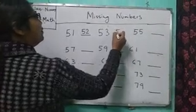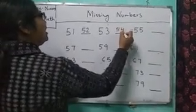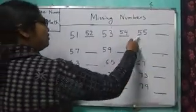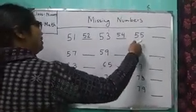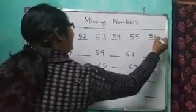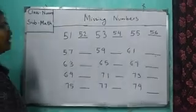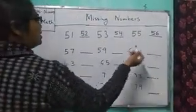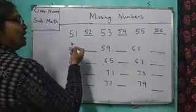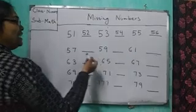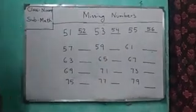Then you will fill here right here. 54, 55, 56. Clear? So you will have to follow this process. You will have to read the number serially. Then you can fill this missing number very easily. Again I am going to repeat.